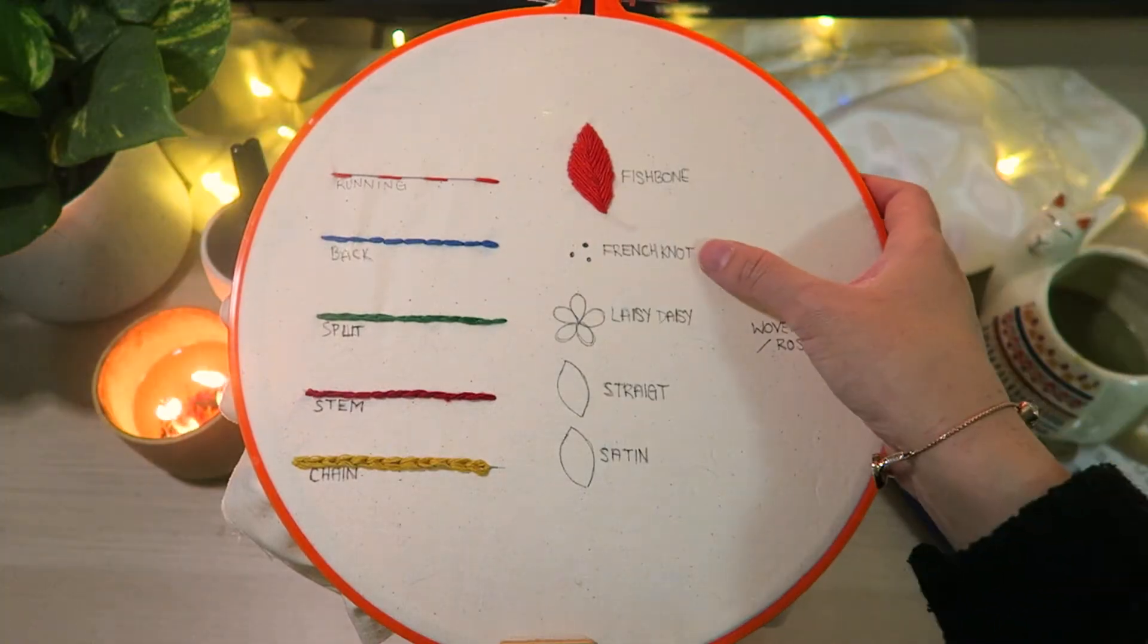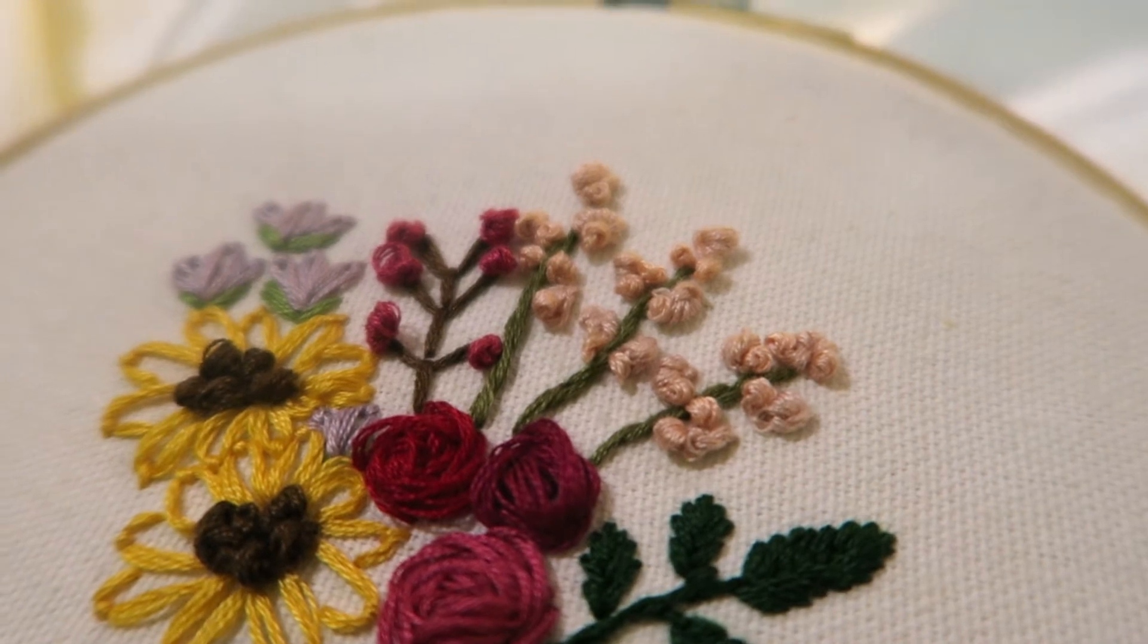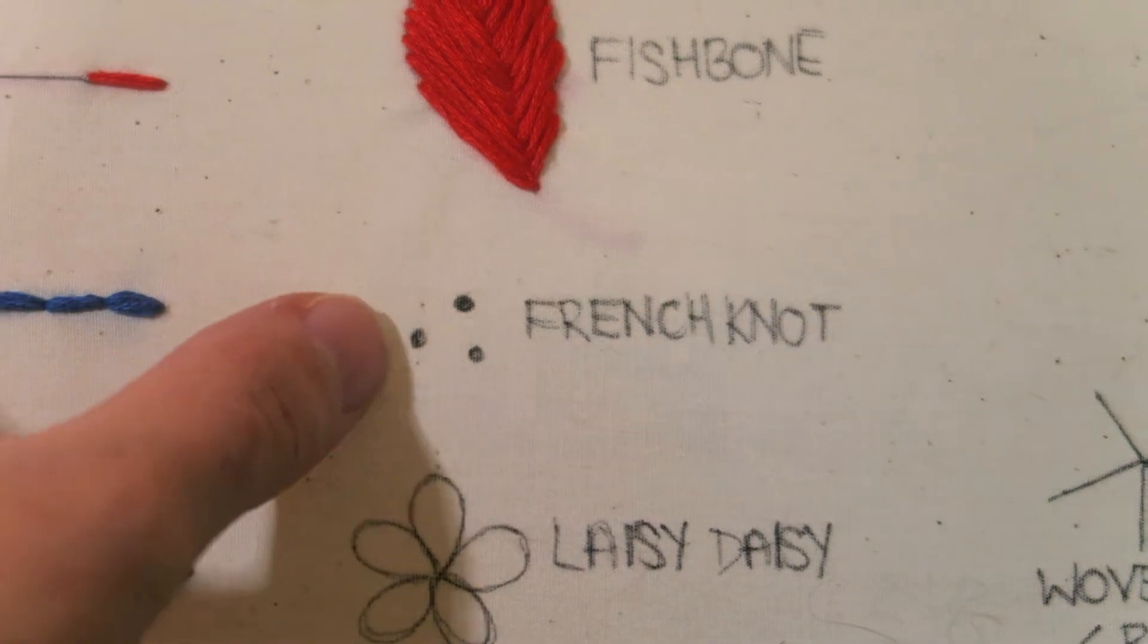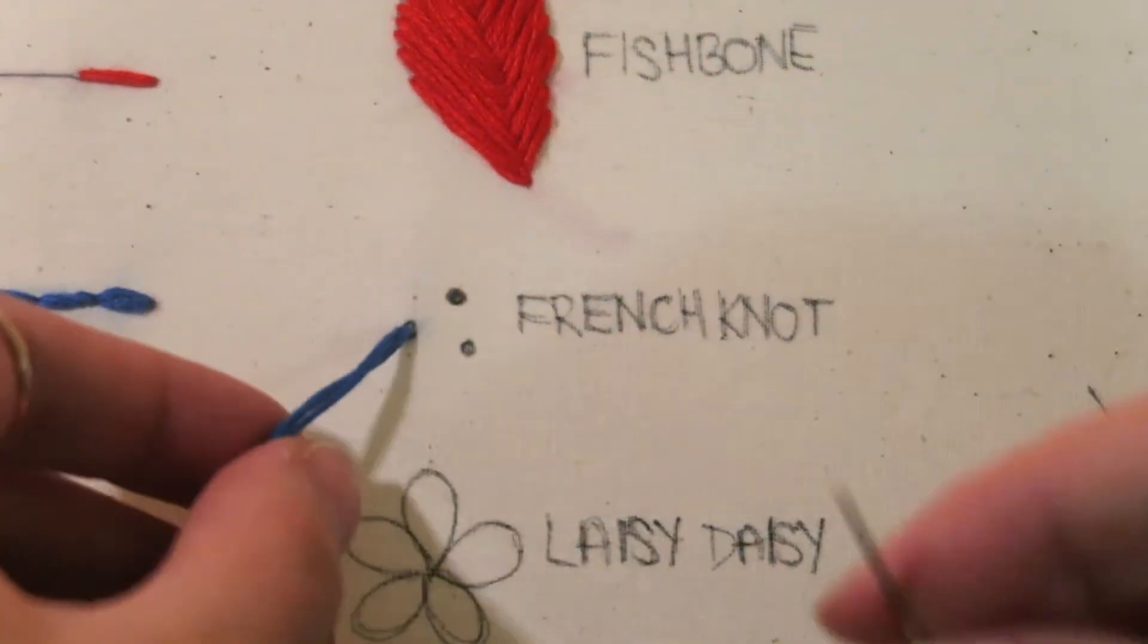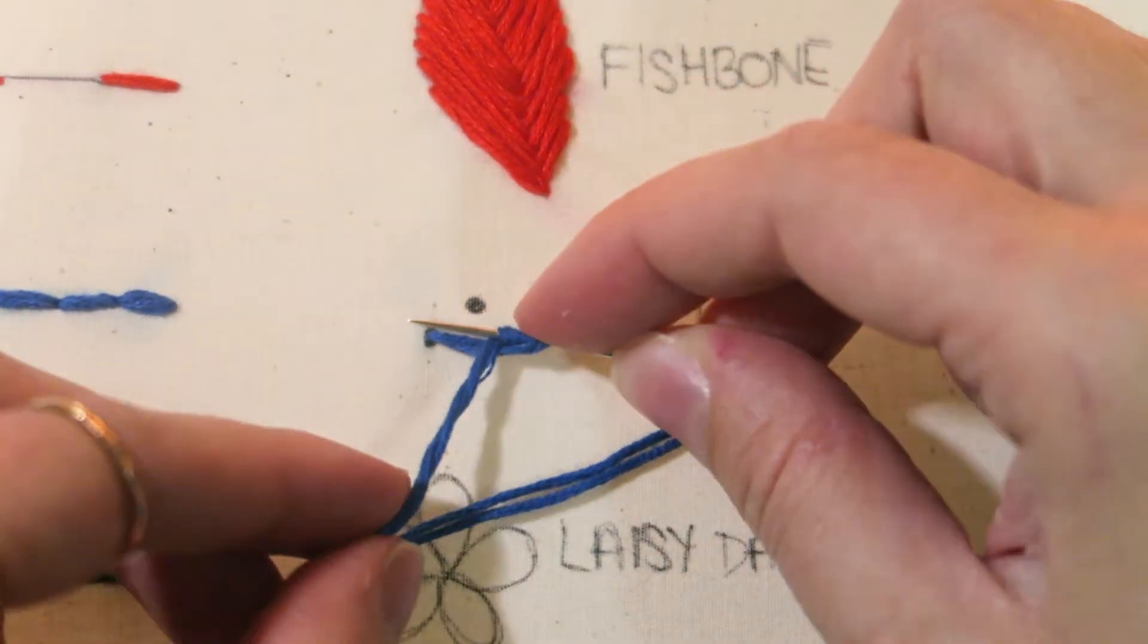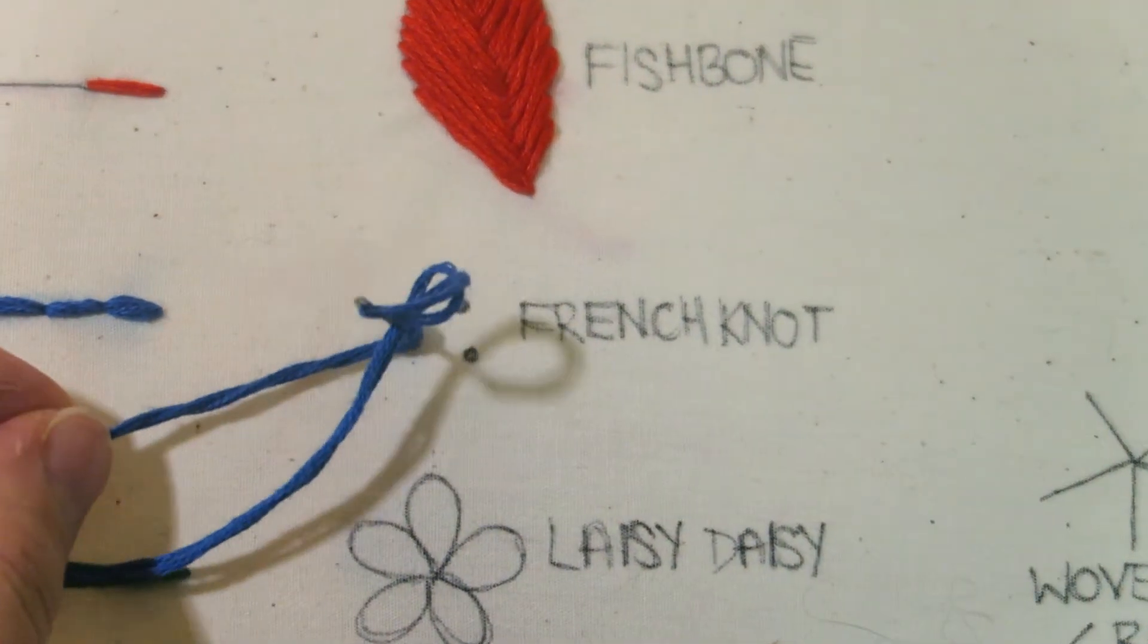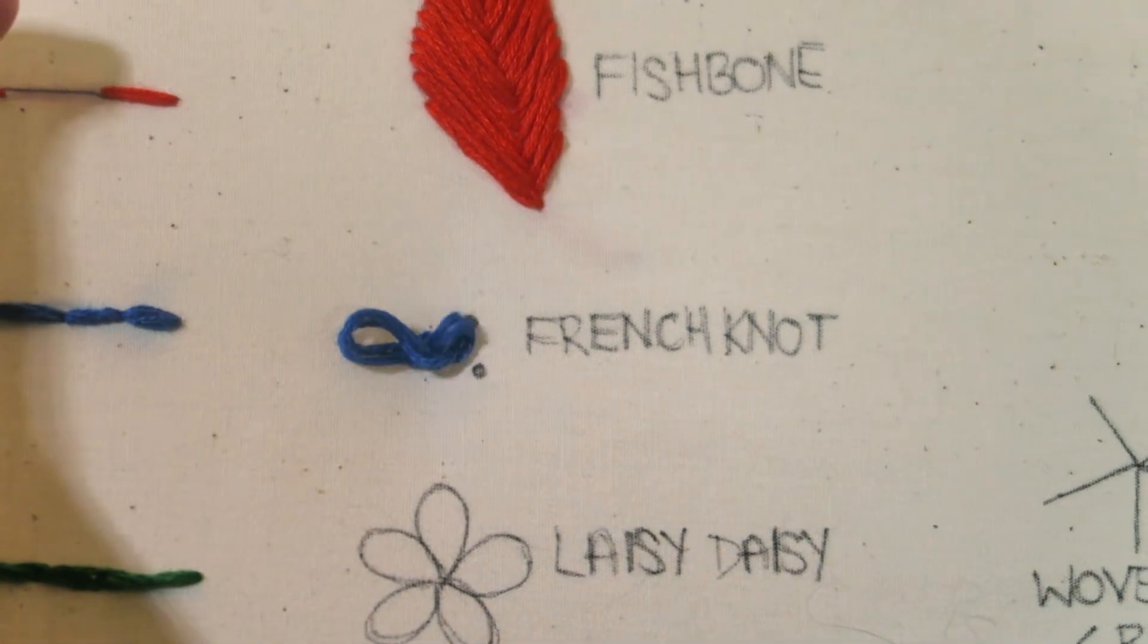The seventh is the French knot. This stitch is so cute and it is really easy. Many people use this knot to fill in flowers. Starting from the back of the hoop pull the needle and thread all the way through to the front. Then wrap the thread a few times around your needle. I like to wrap about three times but the more you wrap the bulkier the knot will be. Then push your needle through the original hole you created. I like to do these slowly because it prevents the thread from tangling.